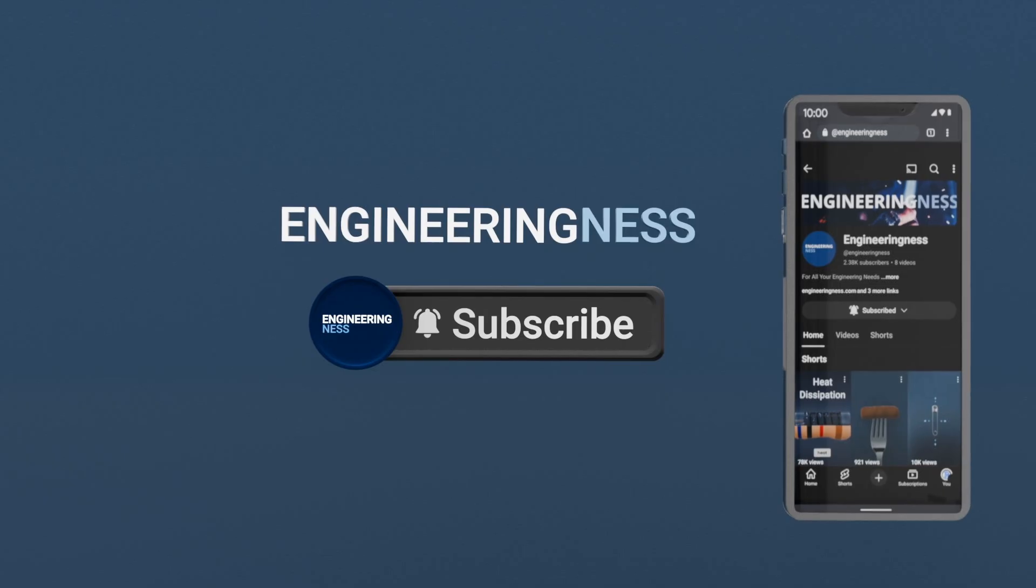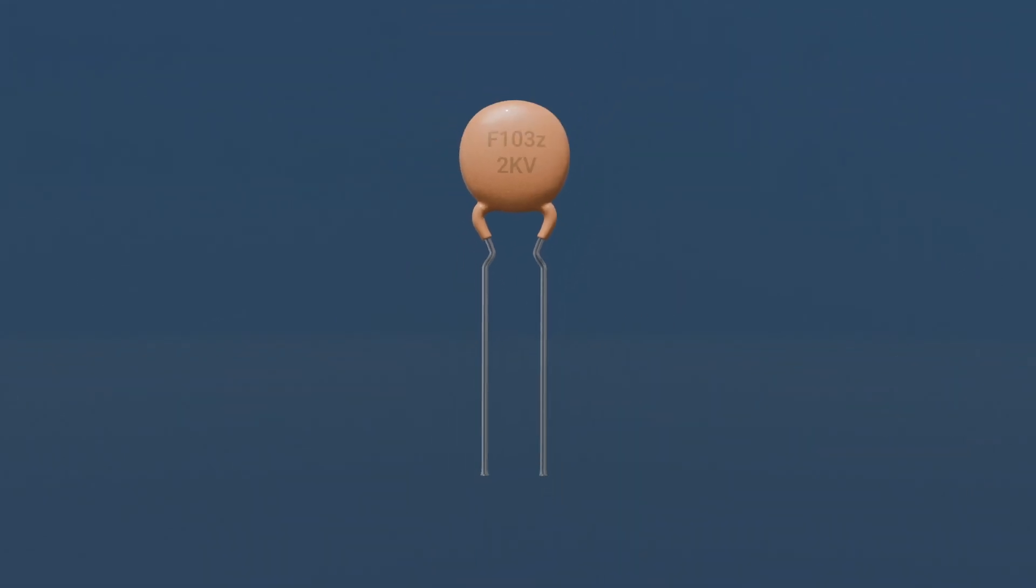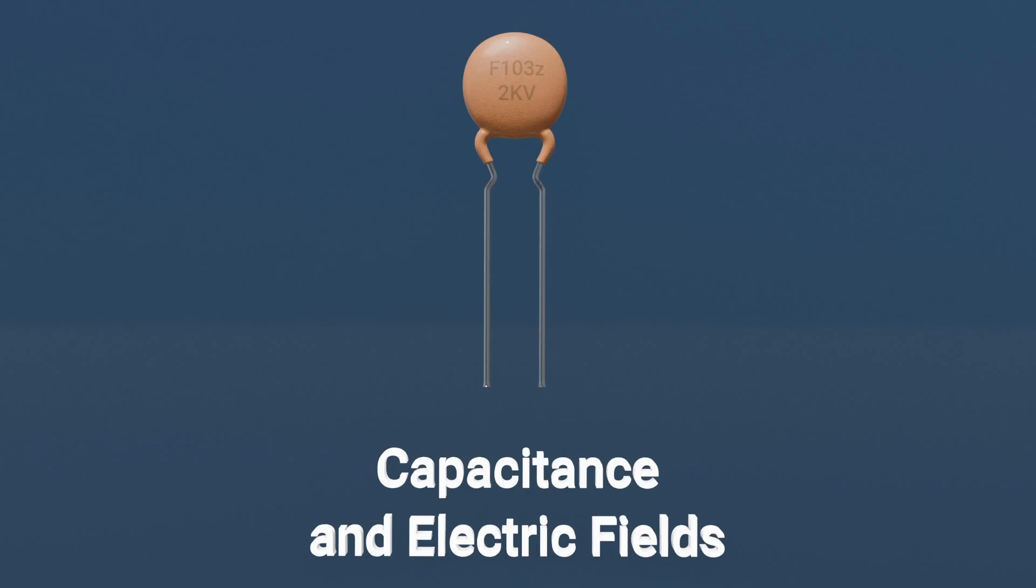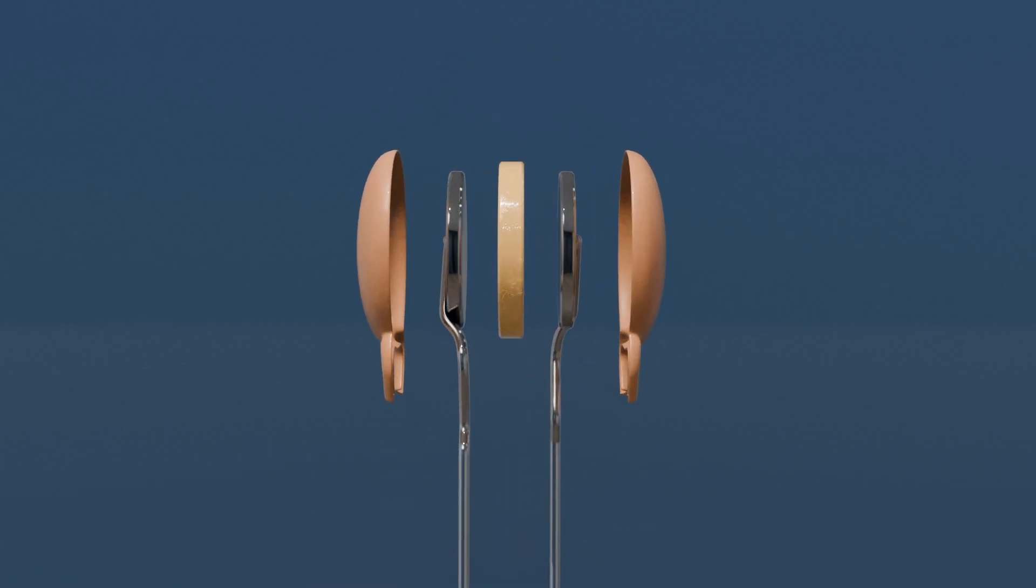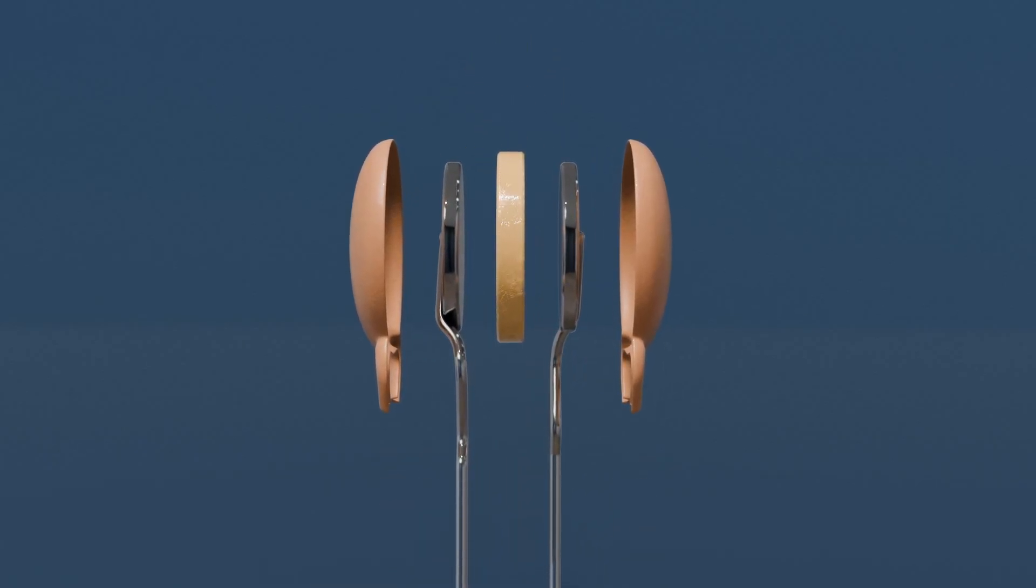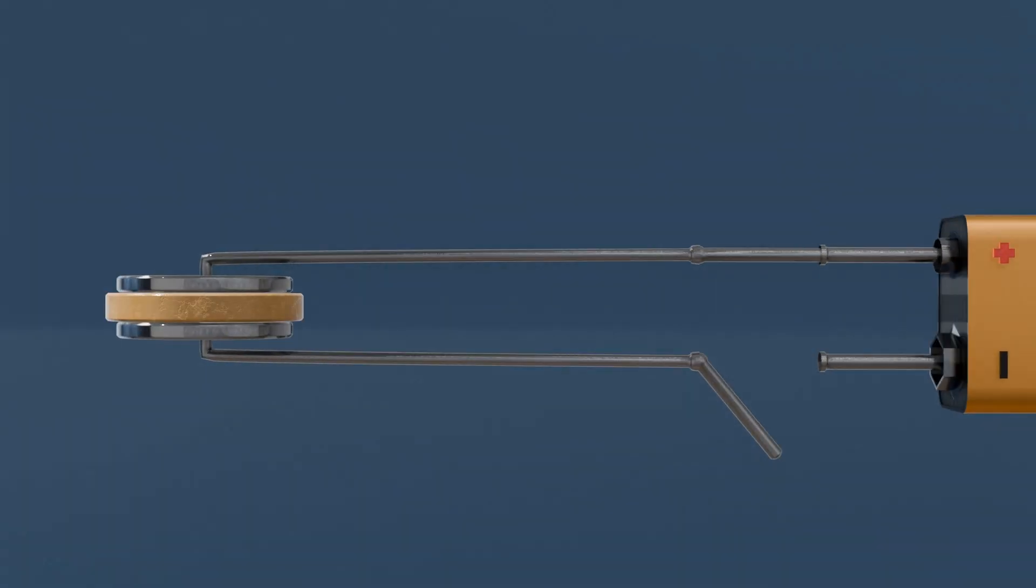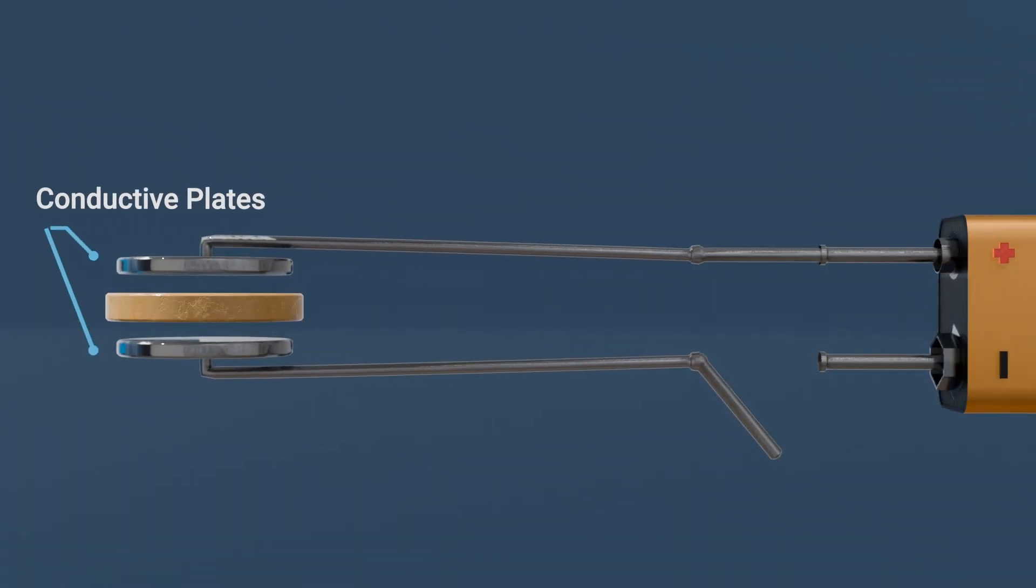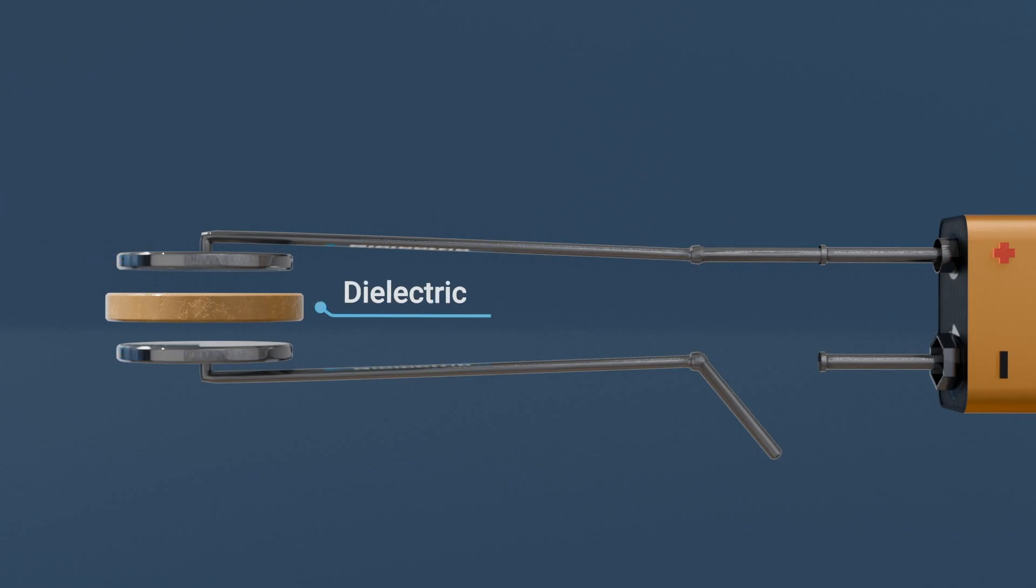To understand that, we need to dive into the scientific principle behind the capacitor: capacitance in electric fields. At its core, a capacitor is a device that stores electrical energy in an electric field. It consists of two conductive plates separated by an insulating material called a dielectric.